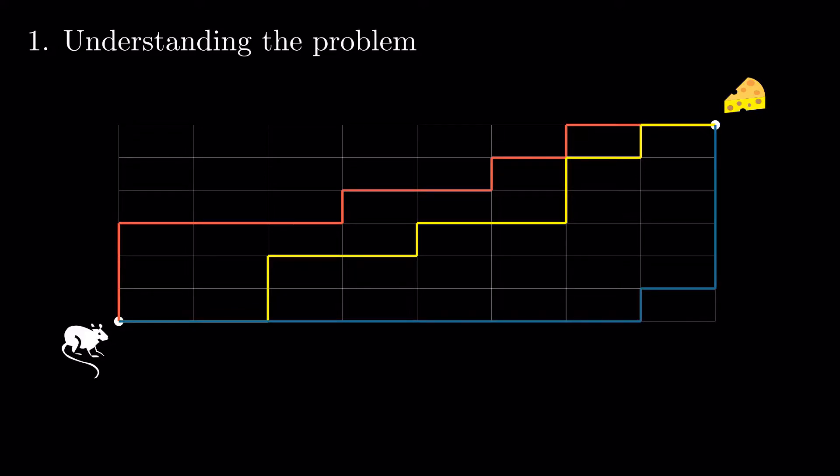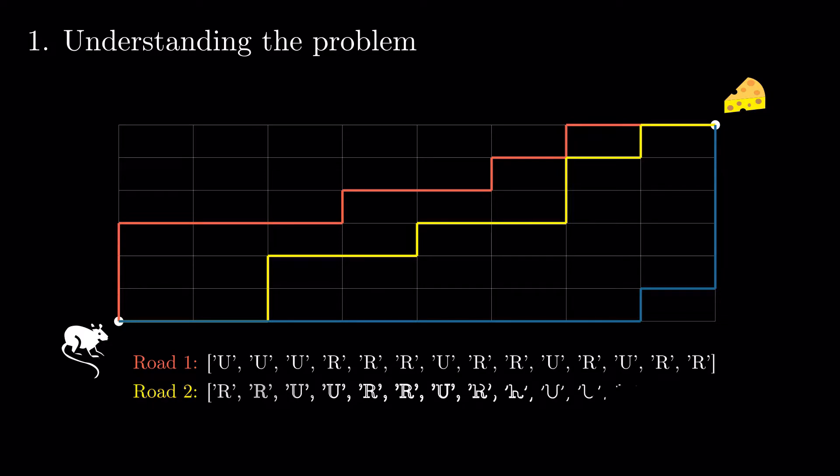Denoting the upward move with a U and the rightward move with an R, let's see if we can quantify a given path. A given path can be written as a sequence of 14 values, 6 U's and 8 R's.